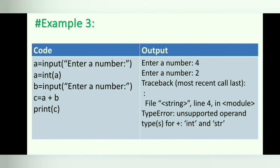Example 3. The last line of the error message indicates the type of error. In this example, the error is type error. Here we have added an integer value to a string value. In this example, we have used typecasting for the variable a to convert a string type value into an integer type, but in the case of variable b, we have not used typecasting. By default, the input function returns a string value even if we enter an integer value. So when we add an integer value to a string value, Python will return an error message.